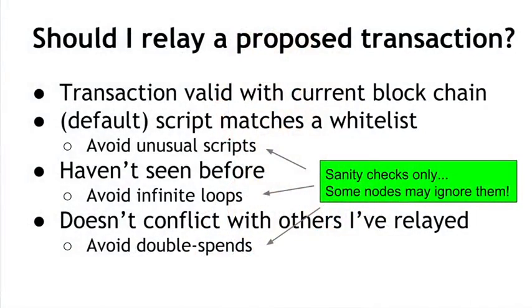It's important to keep in mind that all of these checks are just sanity checks. Well-behaving nodes implement these to try to keep the network healthy and running properly, but there's no rule that says nodes have to follow these specific steps. Since it's a peer-to-peer network and anybody can join, there's always the possibility of a node forwarding double spends, forwarding non-standard transactions, or forwarding invalid transactions. That's why it's important that every node do the checking for itself.